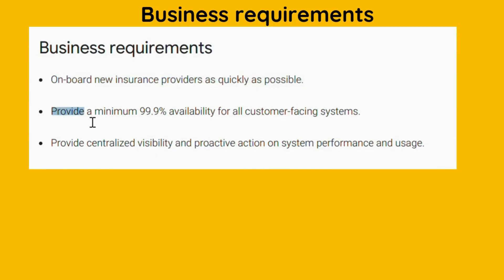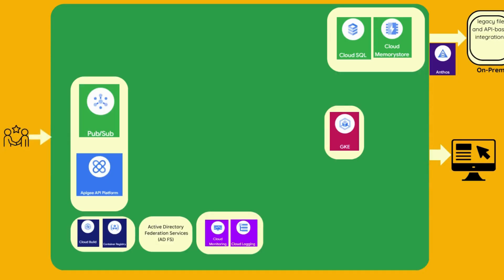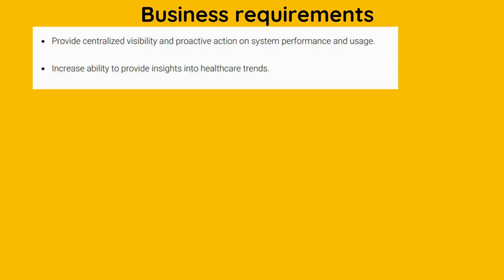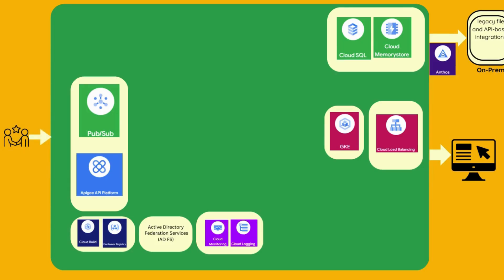To provide a minimum 99.9% availability for all customer-facing systems, we already implemented Google Kubernetes Engine to manage containerised applications with high availability across multiple zones, and Anthos for the on-premises site. Cloud Load Balancing can also be used to distribute traffic evenly and ensure high availability. We already added Cloud Monitoring and Cloud Logging into our design to gain insights into system performance and set up alerts for proactive management.